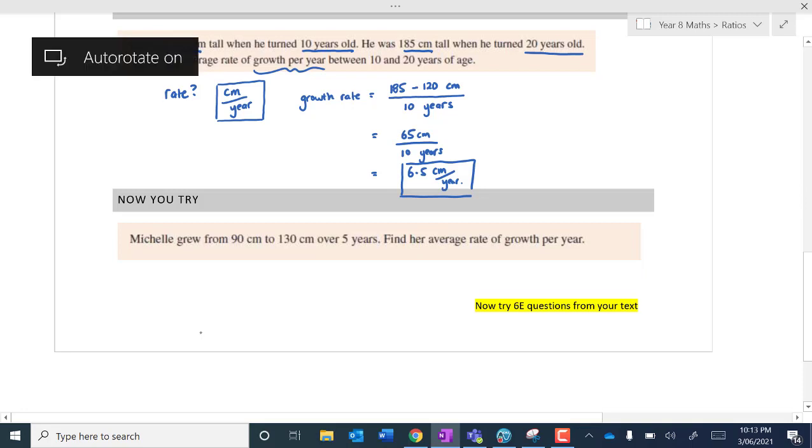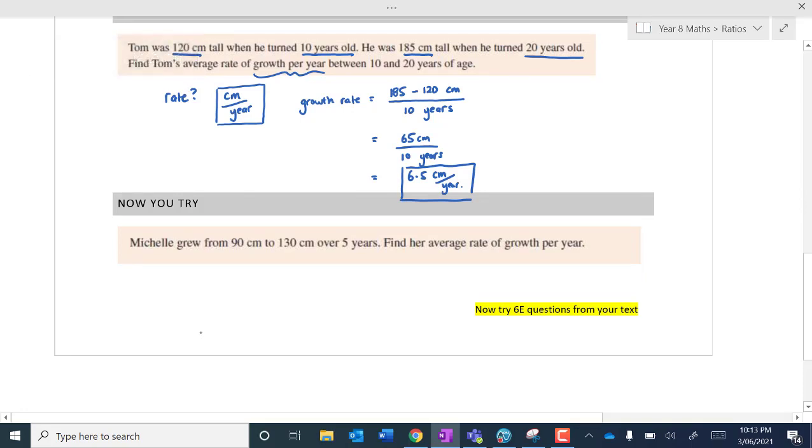Okay, I'm hoping that you have had a bit of a go and think about it. Let's go through this one. So, first of all, what are we looking for? The growth per year we're looking at. So we're looking at the centimetres per year. Identify what rate you're after. Okay, so of course, Michelle grows from 90 centimetres to 130. So if I subtract that, that's going to give me the growth, and that's going to be over five years. Find her average rate of growth. Well, 130 take 90 is 40. 40 divided by 5 centimetres per year is going to be, well, 40 divided by 5 is 8. So that's just going to be 8 centimetres per year.